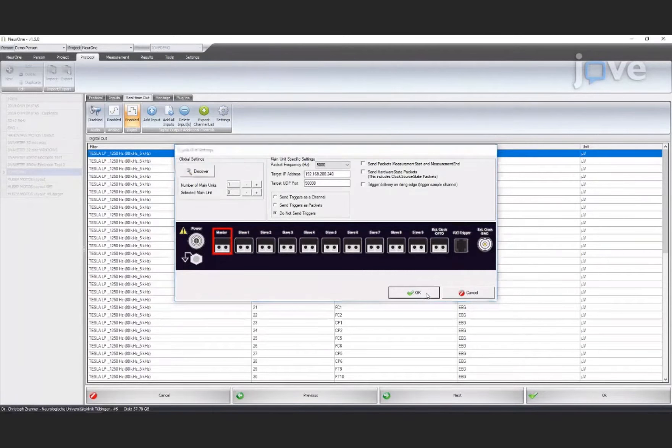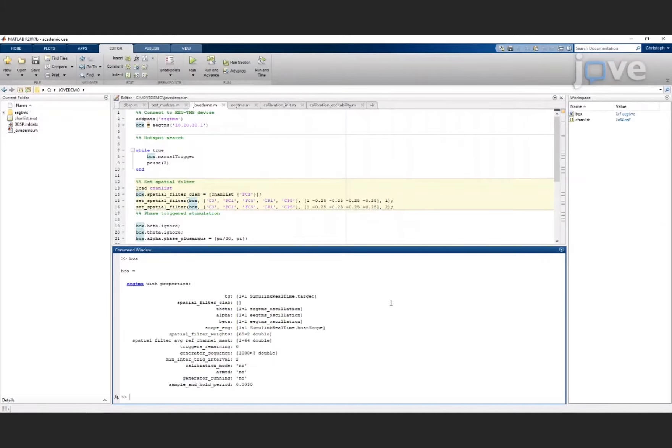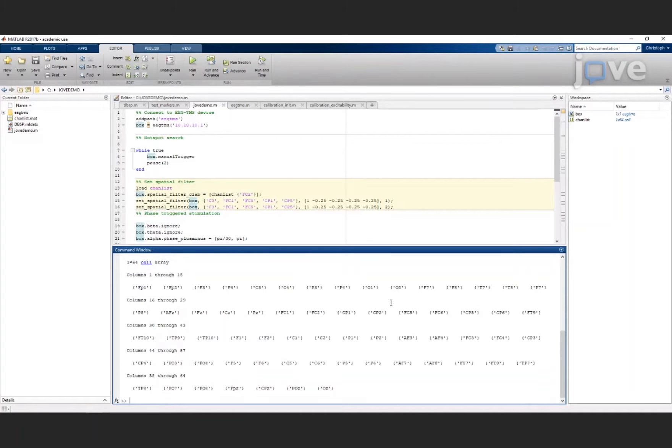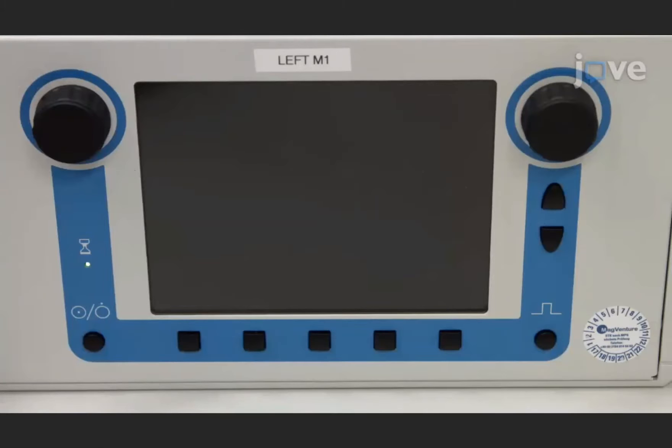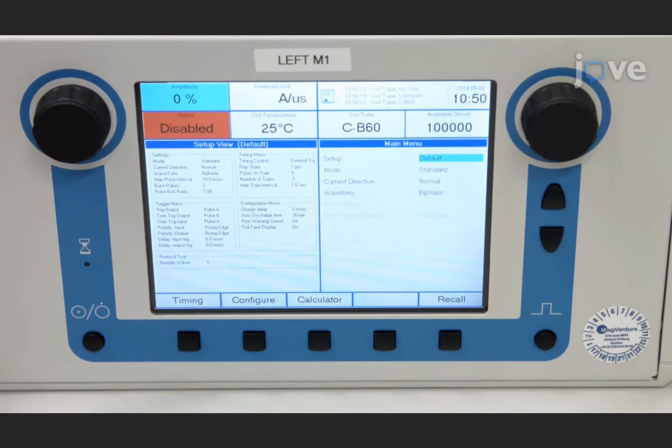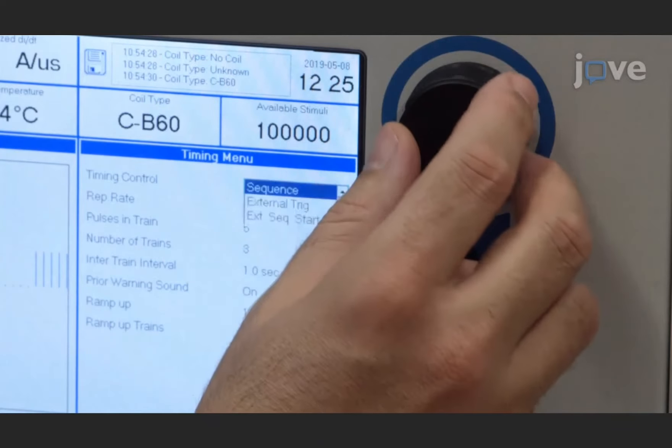On the computer controlling the real-time device, load the software to control the real-time device and ensure that the real-time input channels match the configuration of the EEG system. Then turn on the TMS stimulator and set the configuration to external triggering.